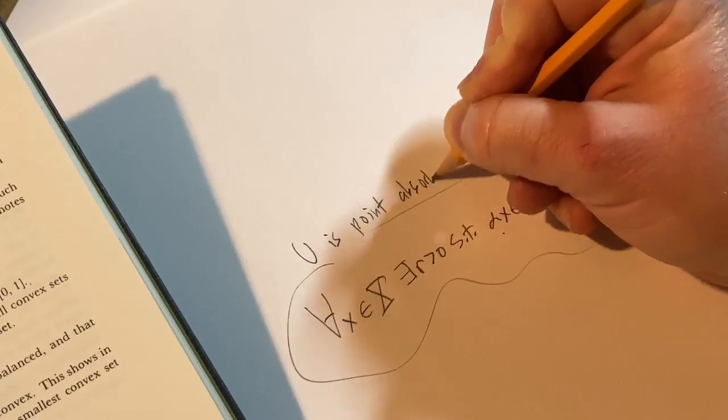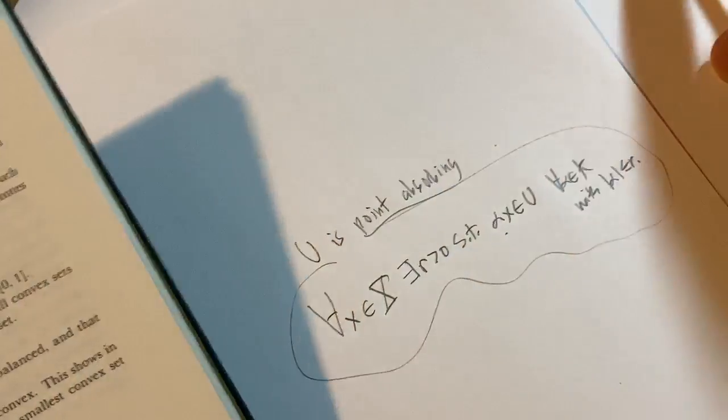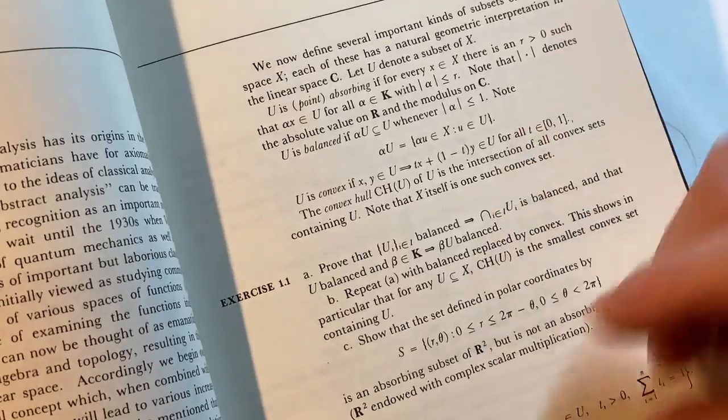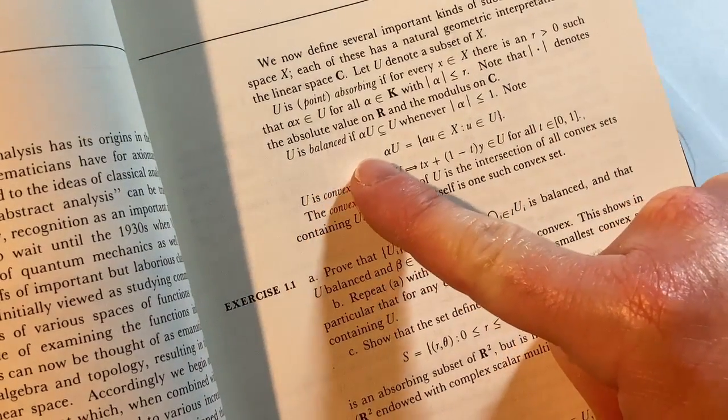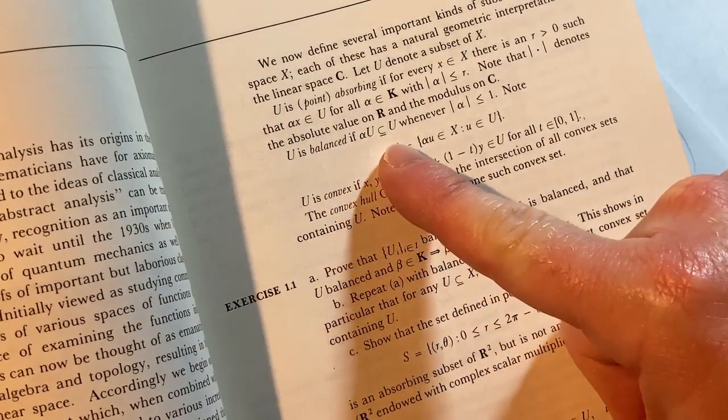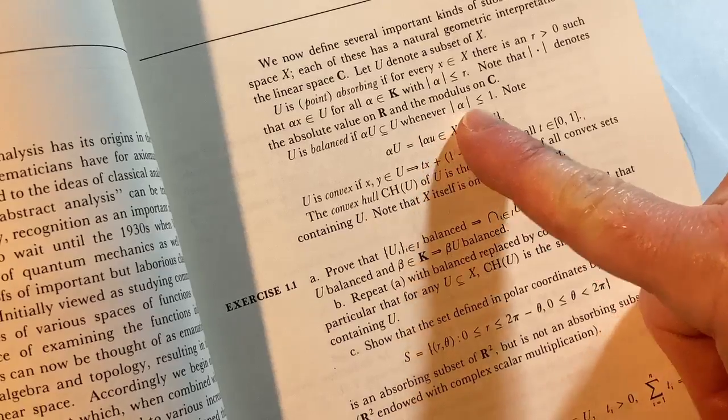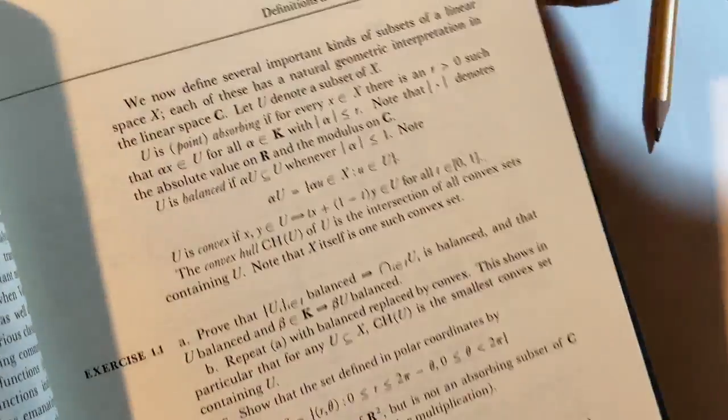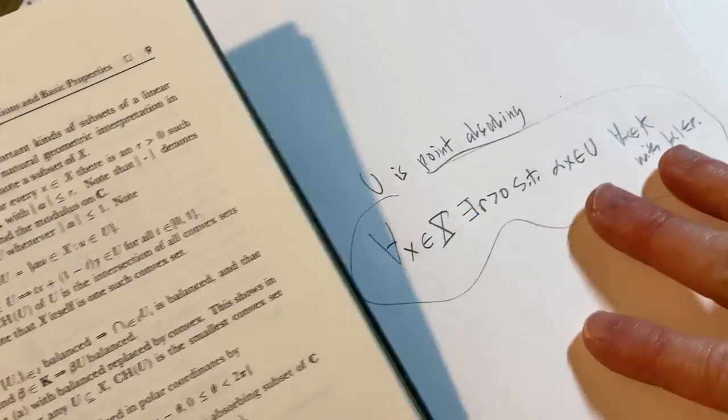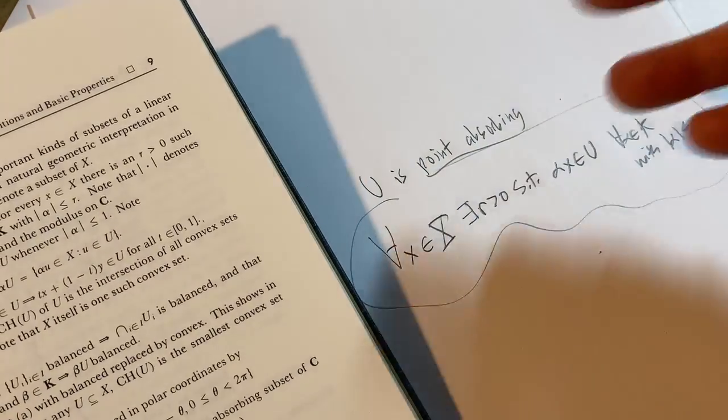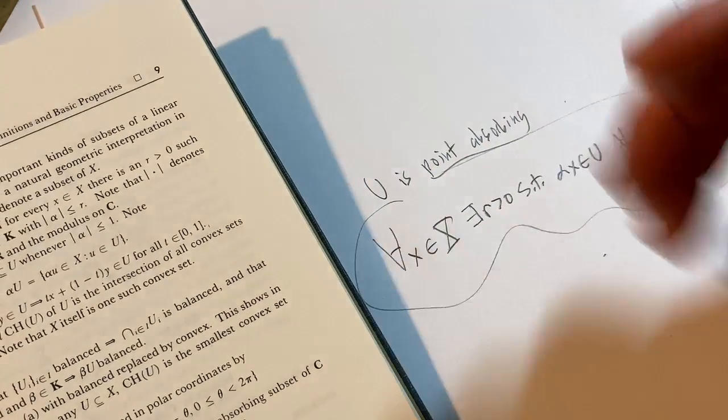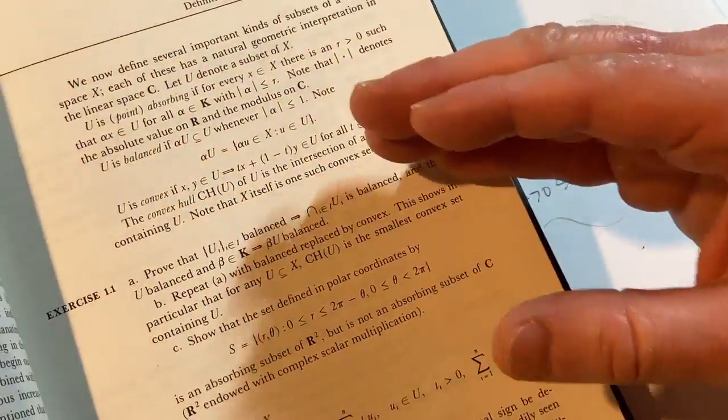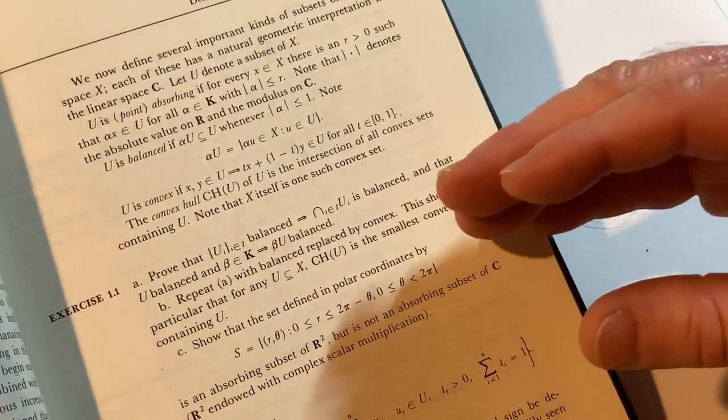So U is point absorbing. This is straight from the book. So interesting, right? So this is right at the beginning of the book. And again, it's probably something you haven't seen. Then it goes on and says U is balanced if alpha U is a subset of U whenever the modulus of alpha is less than or equal to one. And then it goes on and it just keeps defining things. So that's the first step. You know, that's the first step. So step one is you write that down. And then from here, where do you go next? Well, you keep reading and then you just keep doing that every time you run into something you don't understand.